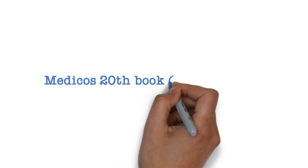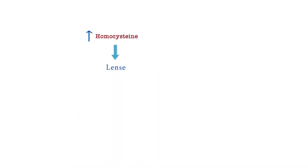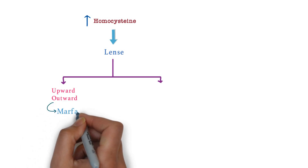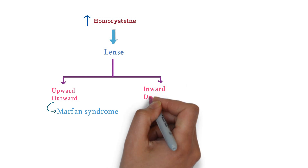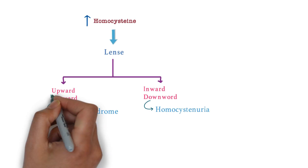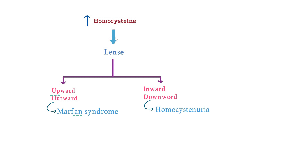These buzzwords will be available in my book and hard copies will be shared soon. Now let's take one question from biochemistry integrated with ophthalmology. If there is dislocation of the lens with rising homocysteine, check the direction: if it is outward and upward, think for Marfan syndrome; if it is inward and downward, think for homocystinuria. The fan is above — outward and upward is Marfan syndrome, and inward and downward is homocystinuria.